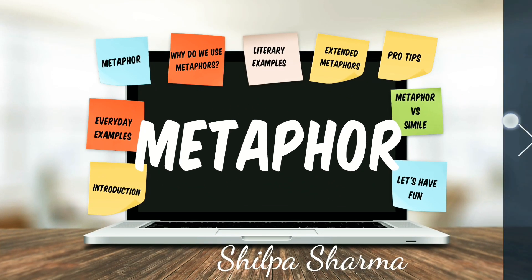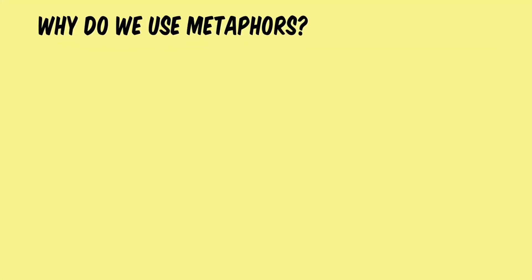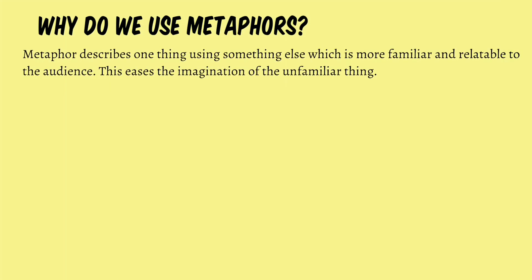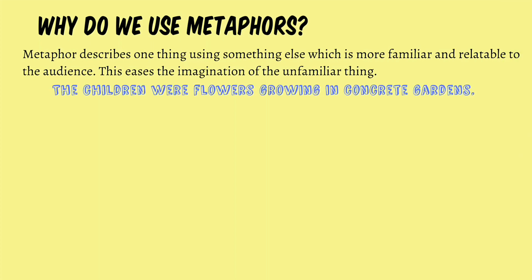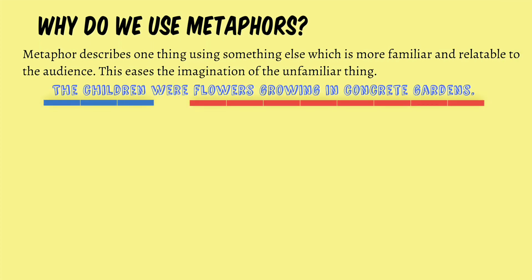Now that we've discussed metaphor as a literary device, let's find out the functions of a metaphor — why do we use them? Metaphor describes one thing using something else that is more familiar and relatable to the audience, easing the imagination of the unfamiliar thing. For example, 'The children were flowers growing in concrete gardens' — the children's difficult childhood is described using the image of flowers growing in concrete, making it easier for us to imagine how difficult that childhood might have been.